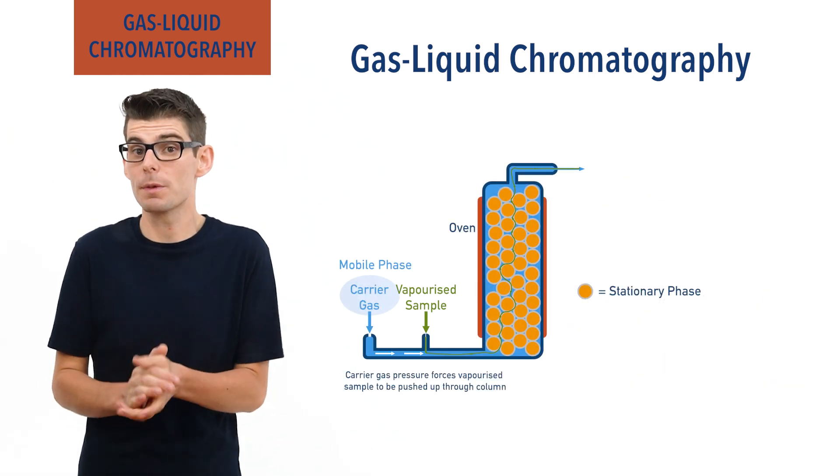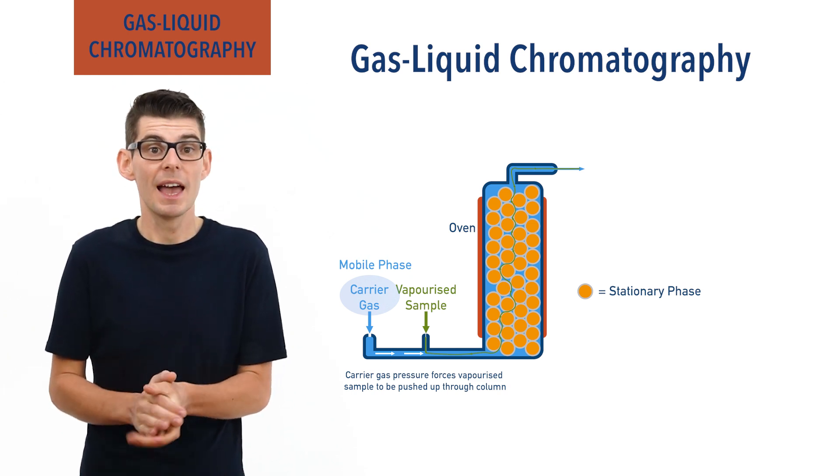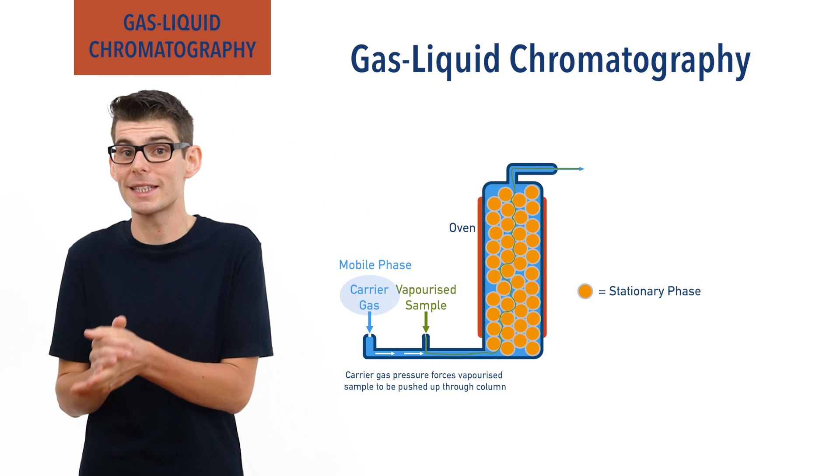A signal is produced by a detector each time a compound comes out of the column and the time is recorded for when the signal was detected.